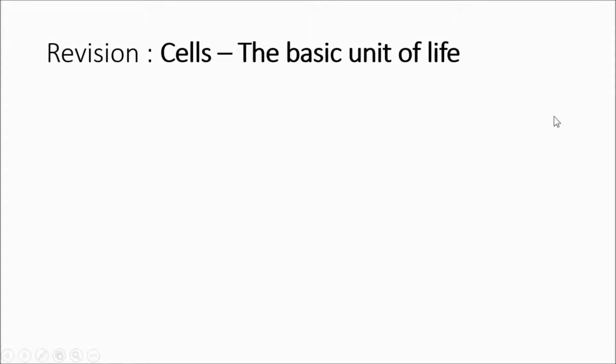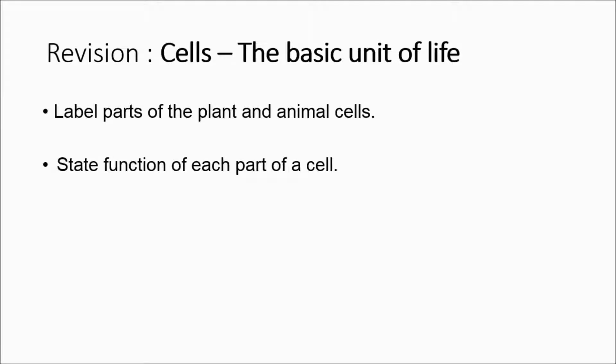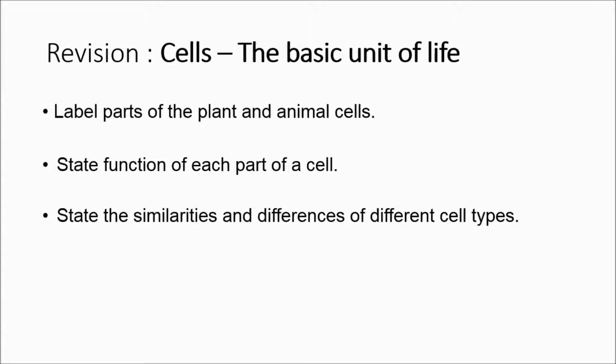We are going to revise the topic on cells, the basic unit of life. In this topic on cells, I will be covering three things. Firstly, label the parts of the plant and animal cell. Secondly, state the functions of each part of the cell. And finally, state the similarities and differences of different types of cells. Let's begin our revision.